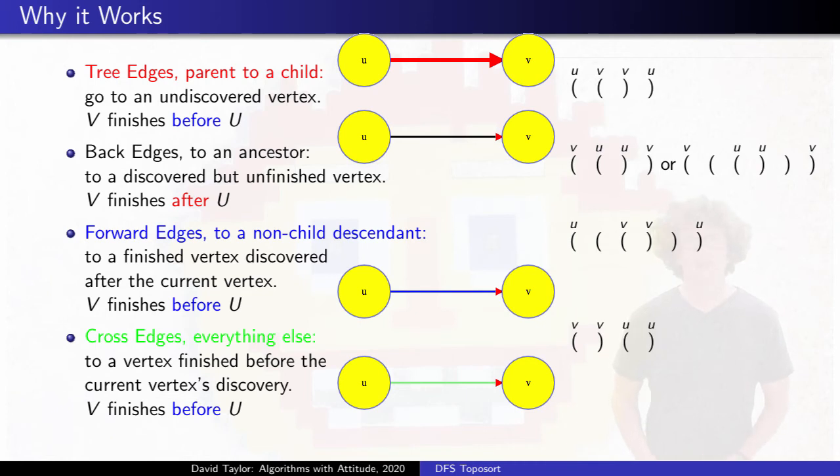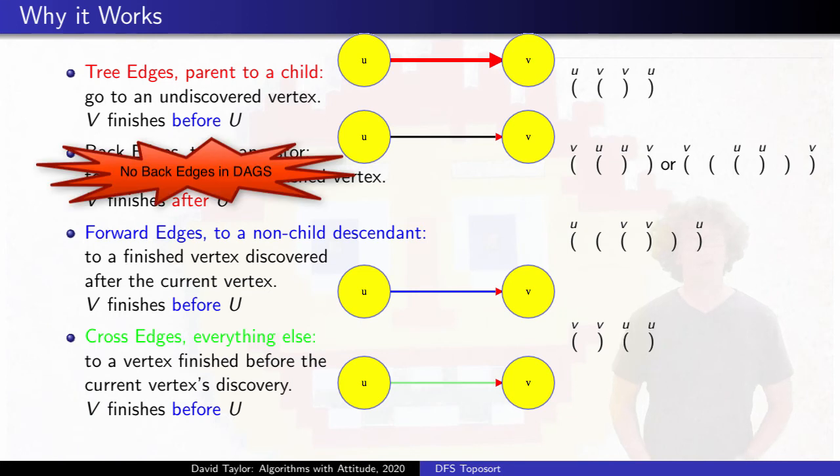The only problem is back edges, where vertex u would finish before v. But for depth first search on an acyclic graph, there are no back edges, because a back edge completes a cycle between a vertex and its ancestor. So don't worry about back edges.